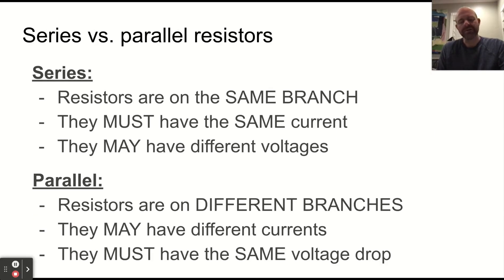When we do talk about series and parallel, we've already seen these. Series, they're on the same branch. They have to have the same current. They could have different voltages. Parallel, if we have different branches, they may have the same current, but they must have the same voltage.